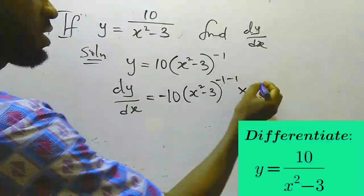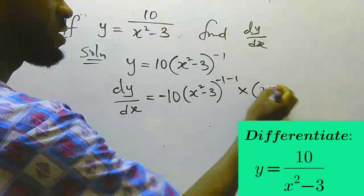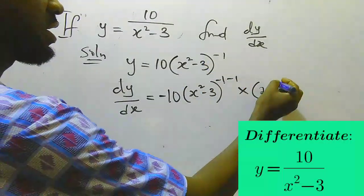Differentiate x squared, that gives us 2x. Differentiate minus 3, that gives us 0.